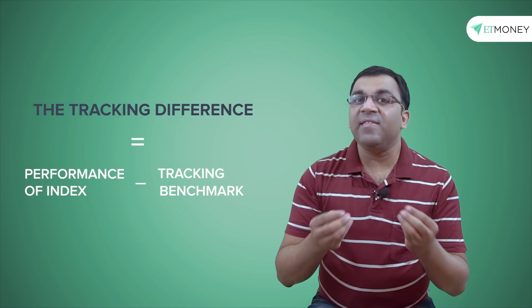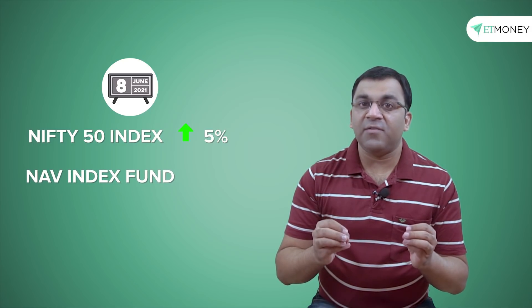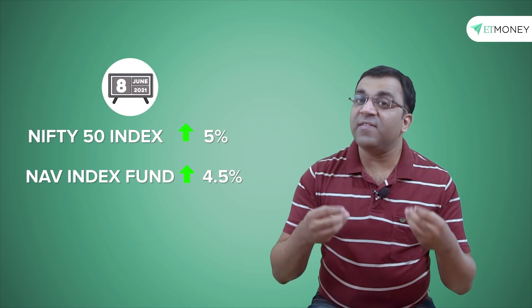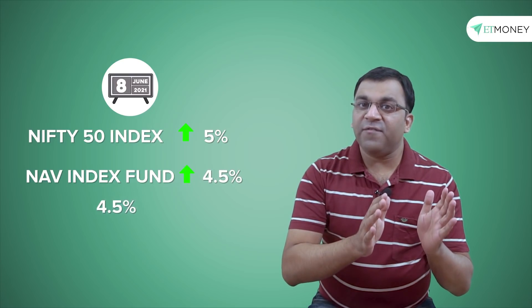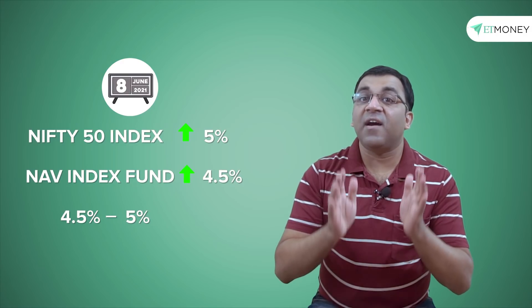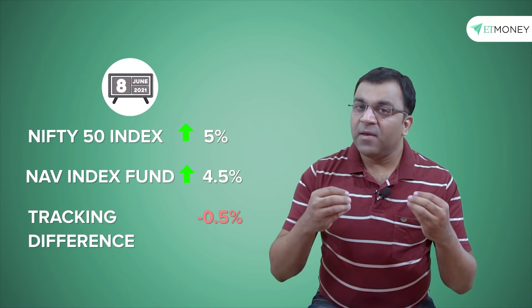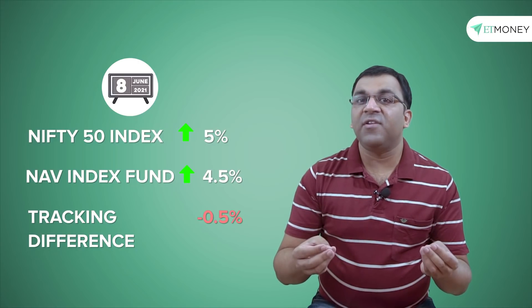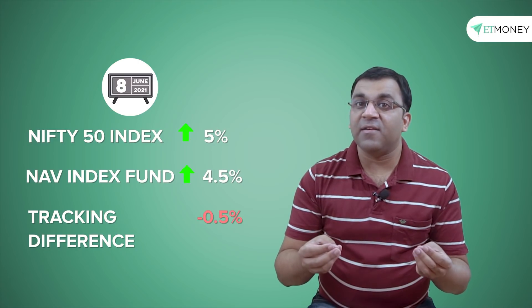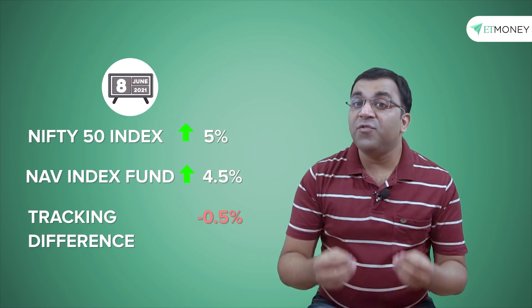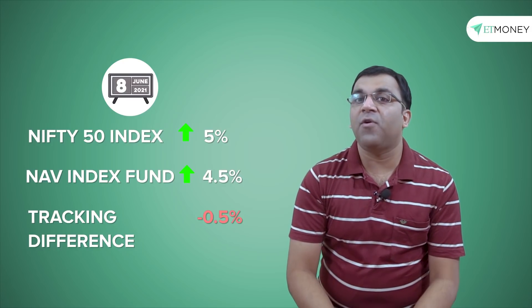For instance, let's say the Nifty 50 index gained by 5% this month. Correspondingly, the NAV of an index fund which tracks the Nifty 50 gained 4.5% during the same period. 4.5 minus 5 gives us a tracking difference of minus 0.5%. Interestingly, this tracking difference need not always be negative, and sometimes we see a few index funds even outperforming the benchmark.